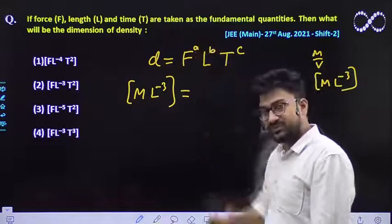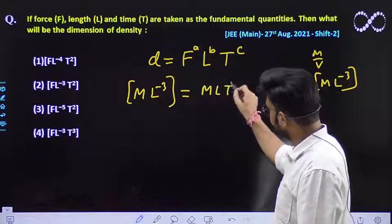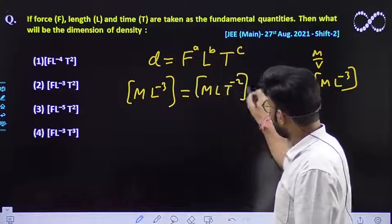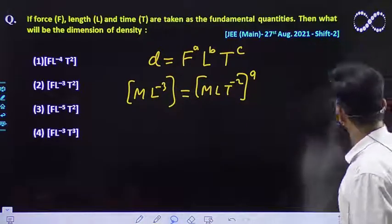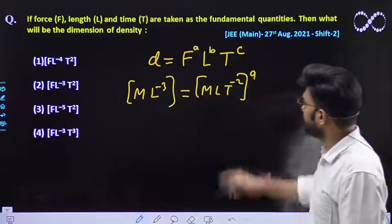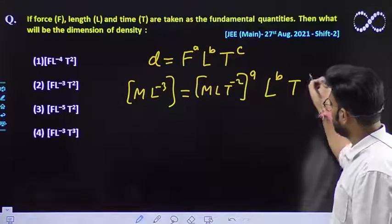And what is the dimension of force? Force we already know that dimension is MLT^-2. So the power of it is A, that we have assumed. Now again what is the dimension, L would be L^B and T would be T^C.